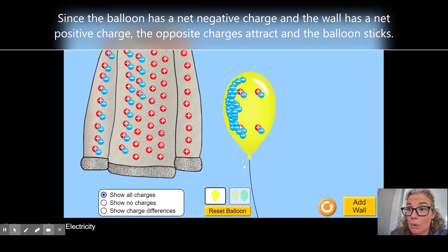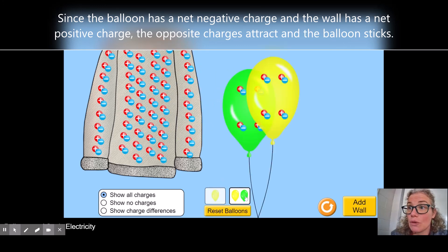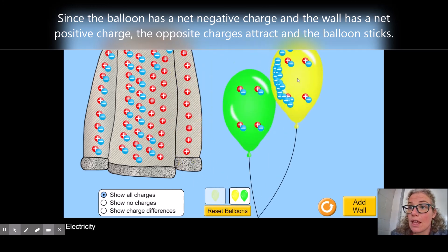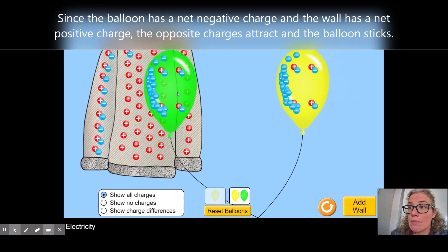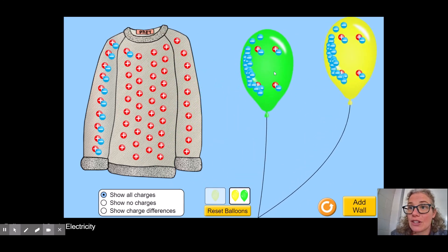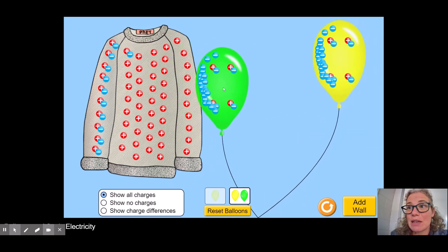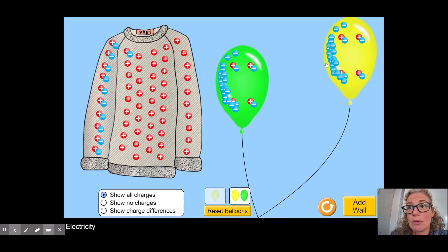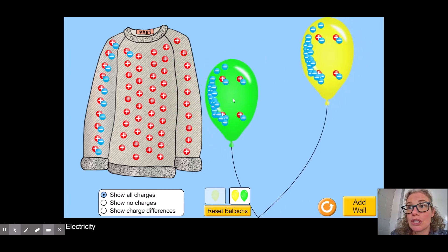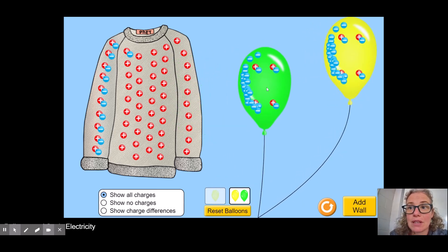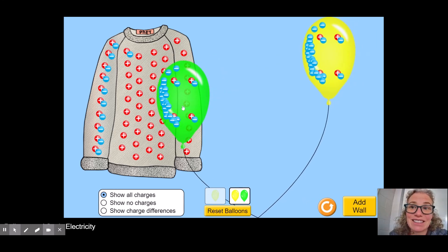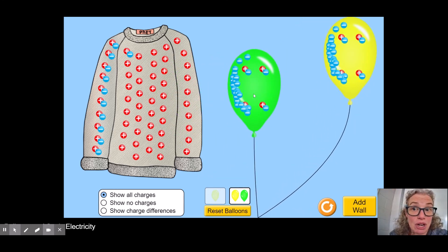The other thing I can do with it is I can have two balloons, and if I rub them both, I can show—it's a little hard to see—but you can see the green balloon and the yellow balloon pushing each other away because they are both net negative and have the same charge, so like charges repel each other.